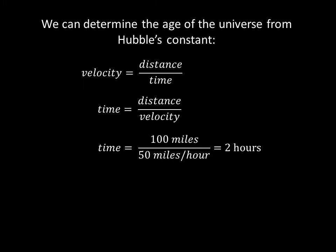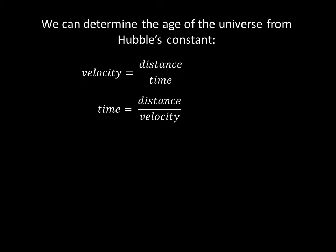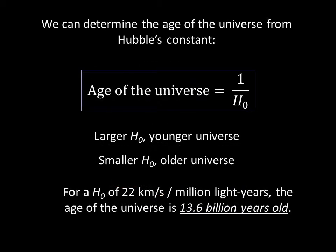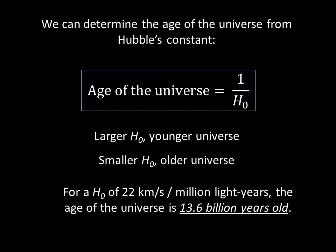We can calculate how long galaxies have been speeding through the universe in the same way. We know their velocities from observing the Doppler redshift; the distance we can obtain via Hubble's Law. The time since the universe has been expanding is equal to 1 over the Hubble constant. The age of the universe is, then, the inverse of the Hubble constant. A larger Hubble constant will give us a younger universe, and a smaller Hubble constant will give us an older universe. For a Hubble constant of 22 kilometers per second per million light-years, we calculate the age of the universe to be about 13.6 billion years.